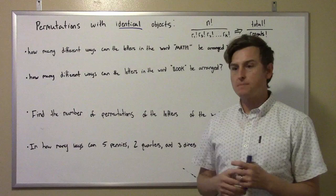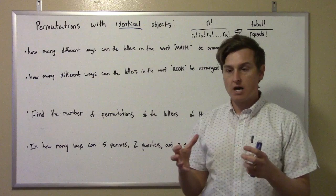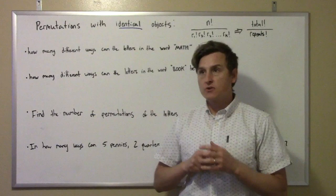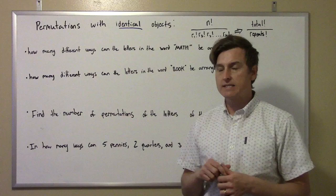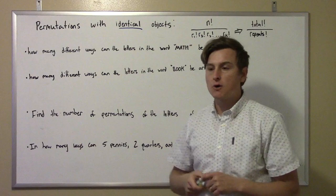In yesterday's videos we talked about basic permutations with a certain amount of objects. We also talked about if you have a certain amount of objects and you only want to take a few of them at a time, and how you arrange those. So if you're not familiar with those, you should probably go back and watch those videos first, or look in your book for those examples, because this is kind of a building on that — it's an additional thing.